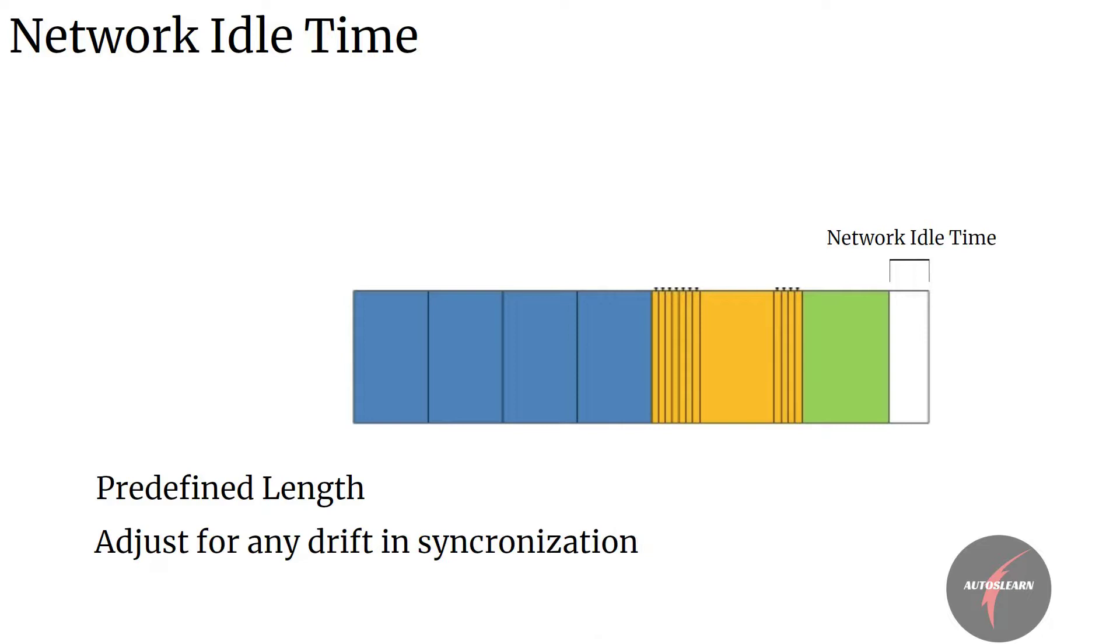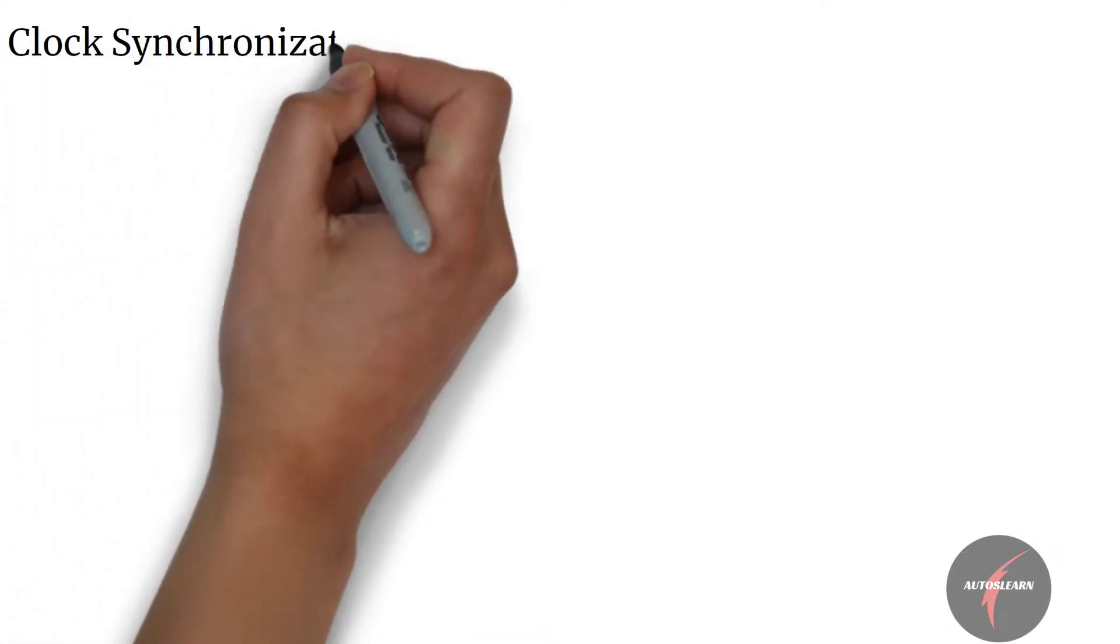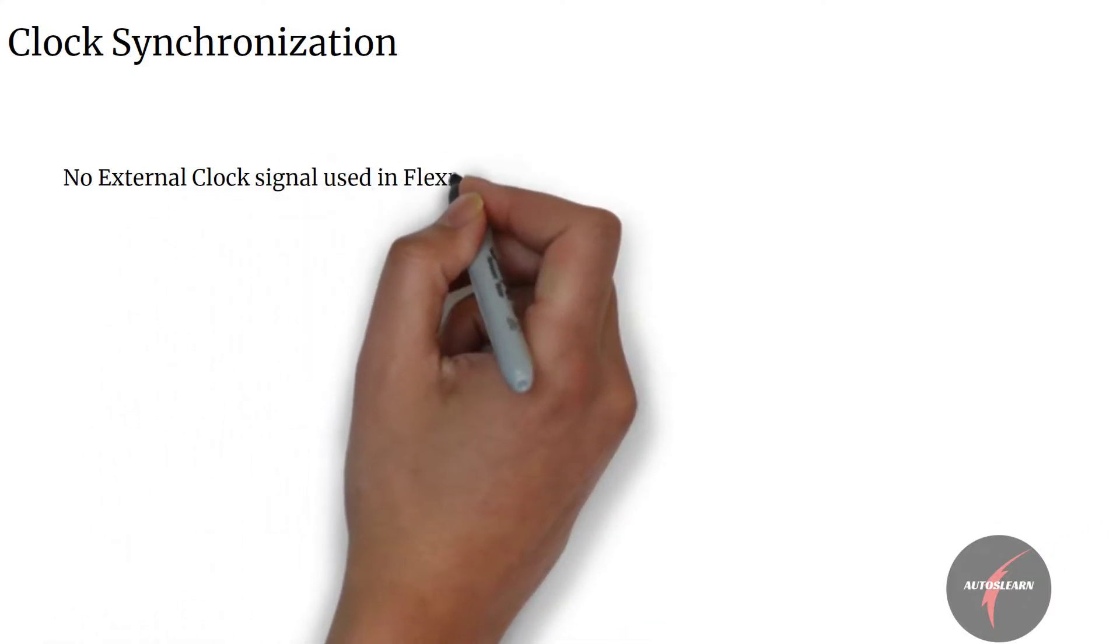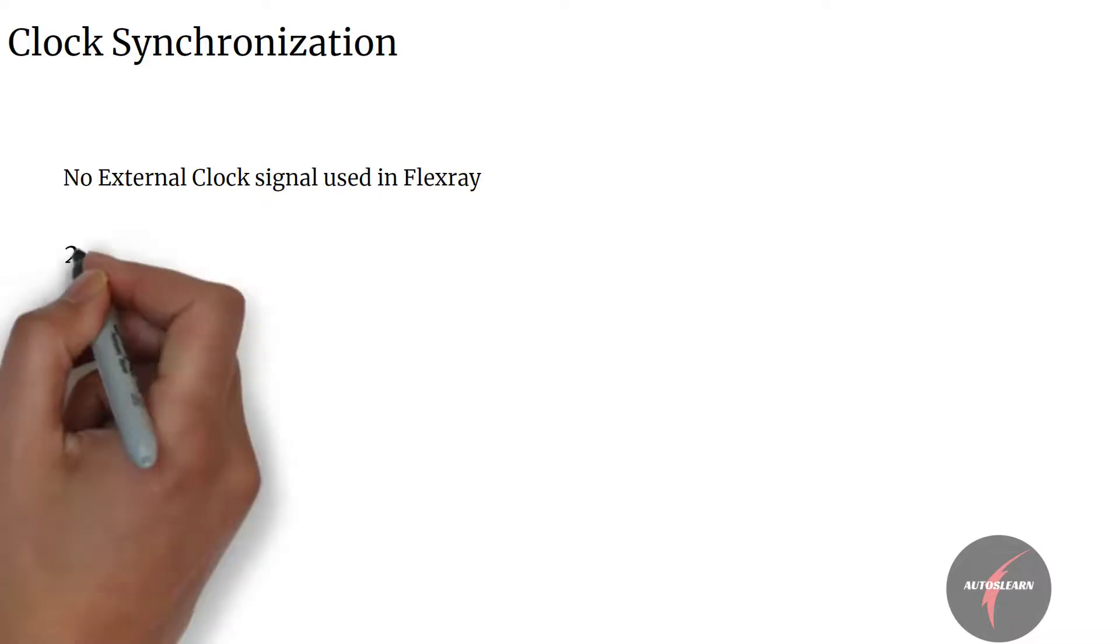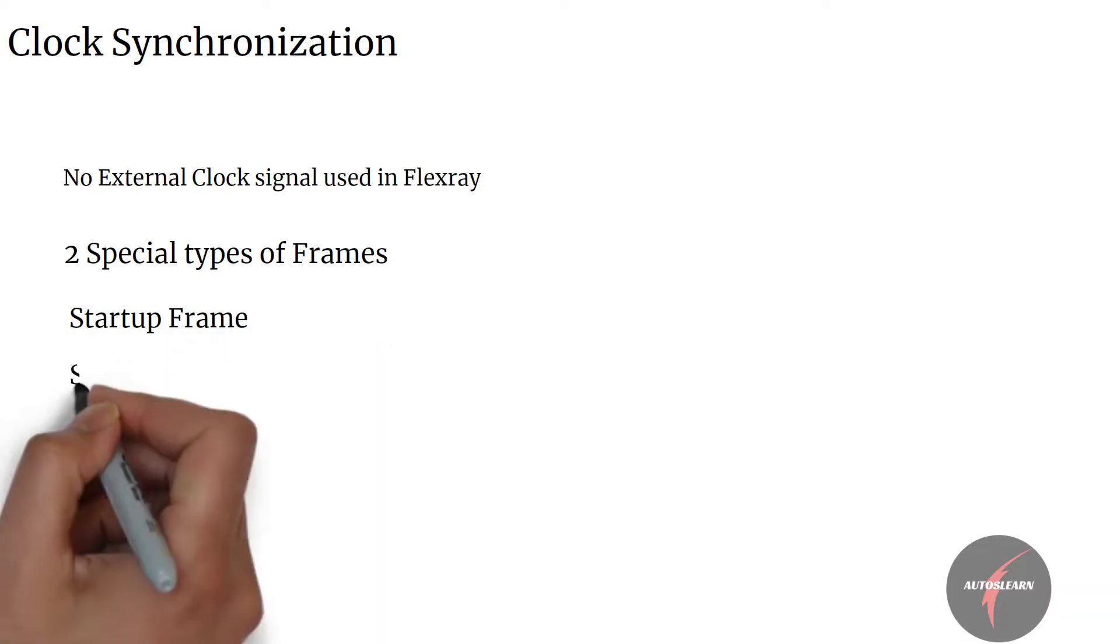Lastly, let's look into the clock synchronization that happens in the network. FlexRay has a unique ability to synchronize nodes on the network without any external synchronization clock signal. To do so, it uses two special types of frames: startup frame and sync frame.